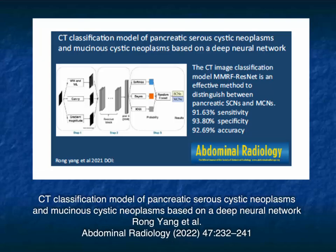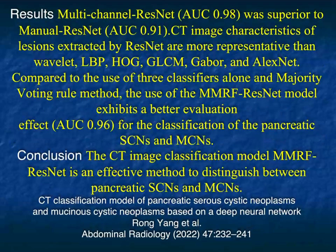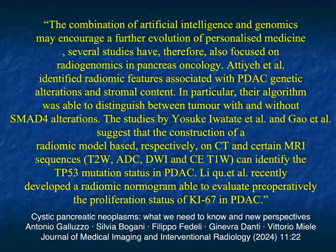An article discussed differentiating serous cystic neoplasms from mucinous ones with a deep learning network, showing very high sensitivity and specificity in this article by Yang. Their purpose was to differentiate those two lesions — which I noted a few talks ago can be very overlapping. They used a random forest classifier, and their conclusion was this technique was an effective model for separating both tumor types. So AI is going to play a major role with radiomics and deep learning in this process.